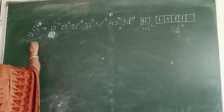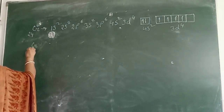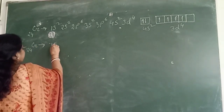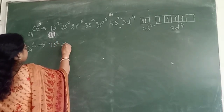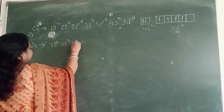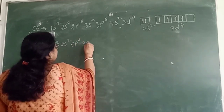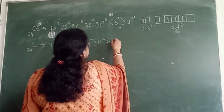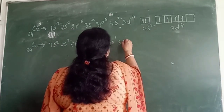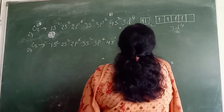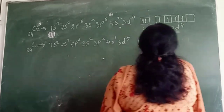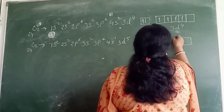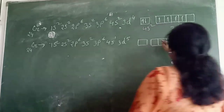The actual electronic configuration of chromium is: 1s2, 2s2, 2p6, 3s2, 3p6, 4s1, 3d5. Counting the d orbital electrons: 1, 2, 3, 4, 5.